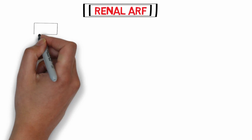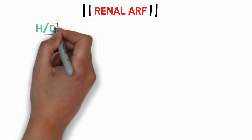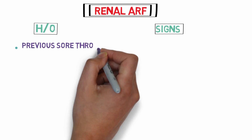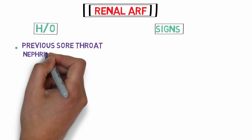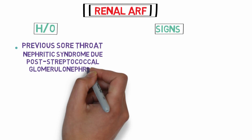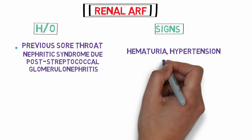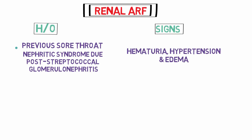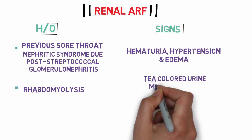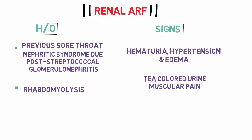Renal ARF has different types of histories depending on the etiology. A history of previous sore throat may indicate nephritic syndrome due to post-streptococcal glomerulonephritis, which may present with a triad of hematuria, hypertension, and edema due to volume retention. Rhabdomyolysis is also an important cause of renal ARF; patients present with tea-colored urine and muscular pain due to breakdown of muscle fibers.